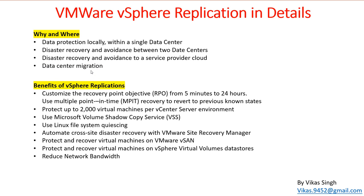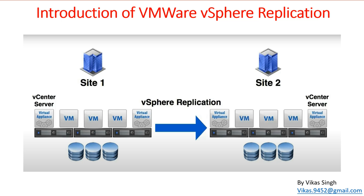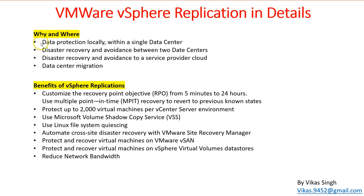The fourth use case is data center migration, which is one of the best examples of using VMware vSphere Replication. If you have data center one and want to migrate everything to data center two, you can configure vSphere Replication, replicate all virtual machines from site one to site two, bring those VMs online at site two, and then decommission site one. This is very helpful for any data center migration running on VMware infrastructure.